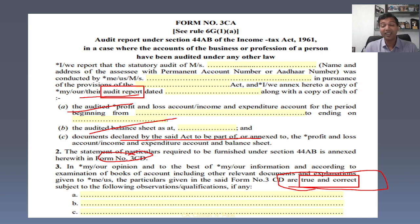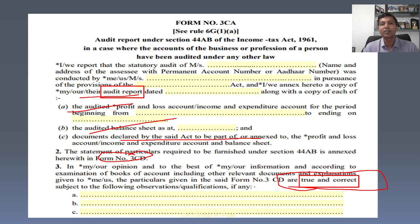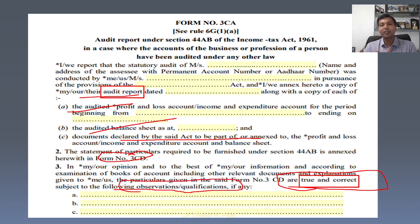The focus is to provide true and correct information furnished in Form 3CD — it is not 'true and fair.' Generally, 'true and fair' is for financial statements; 'true and correct' is for Form 3CD particulars. If you have taken some assumptions, judgments, or workings which may have an impact on the particulars, and if the Form 3CD particulars are not true and correct, please provide your observations, qualifications, or comments in paragraph 3.